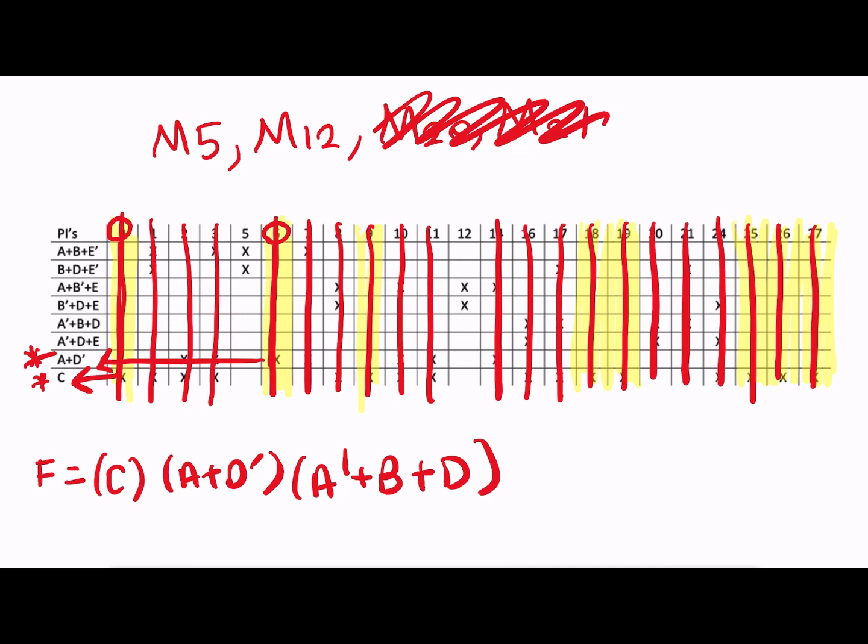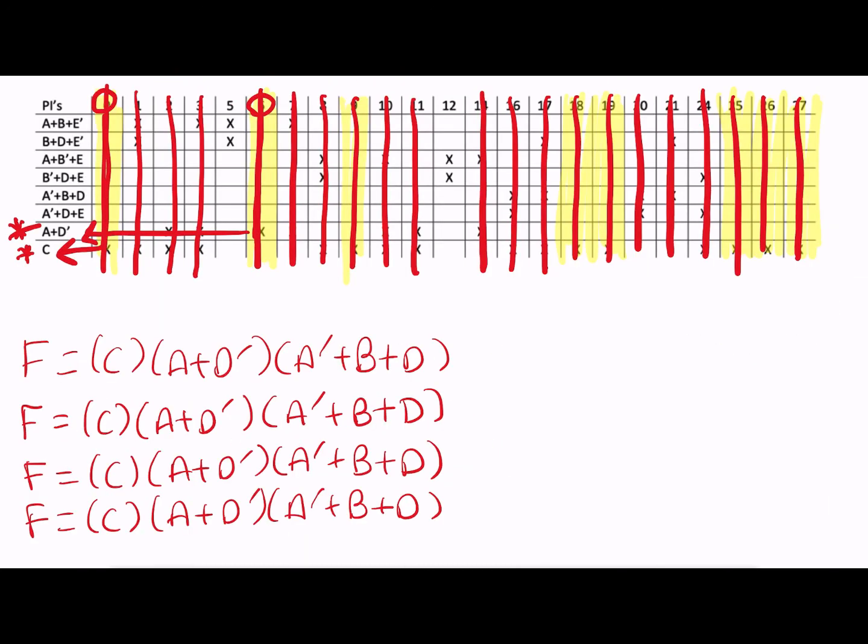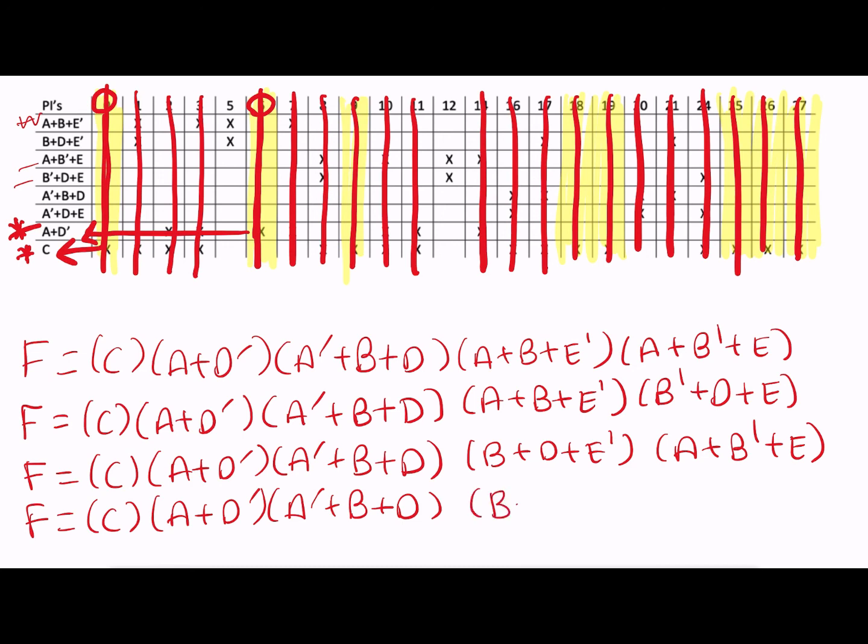Now we just have max terms 5 and 12 left. So here we actually have four different possibilities as far as the prime implicants that we can choose. There is not a single prime implicant that covers both 5 and 12, unfortunately. So there's going to be a bunch of different ways that we can do this. Here are the four different possible expressions that I could come up with. The first one would be using A plus B plus E prime to deal with max term 5, and A plus B prime plus E to deal with max term 12. The next possibility would be using A plus B prime plus E prime to deal with max term 5, but B prime plus D plus E to deal with max term 12. Next possibility is using B plus D plus E prime to deal with max term 5, and A plus B prime plus E to deal with max term 12. And the last possibility is B plus D plus E prime to get 5, and B prime plus D plus E to get 12.